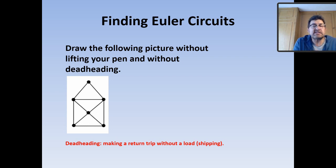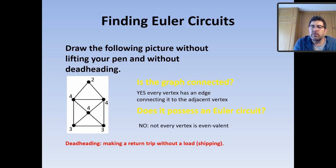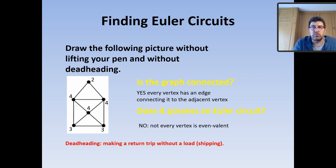Okay let's have a look. Is it a connected graph? Definitely — all vertices are connected by an edge. Does it possess an Eulerian circuit? There's a valence of 2, a valence of 4, 4 and 4. But there are two odd-valence nodes at the bottom — they have an odd degree of 3. So this graph does not possess an Eulerian circuit because it's not even valent. We'll talk about that later when we look at beyond the Euler graphs.